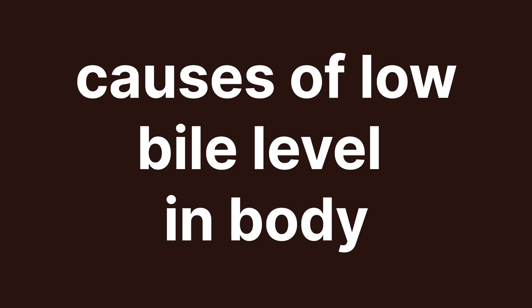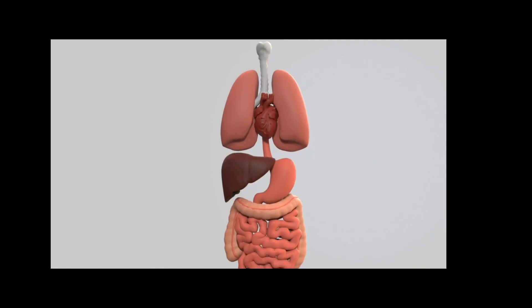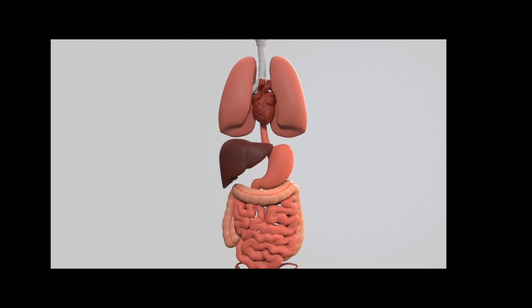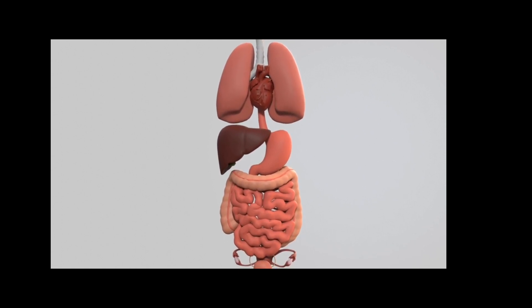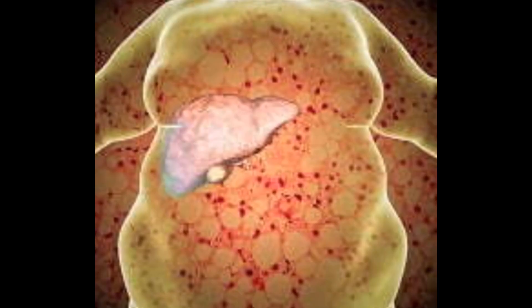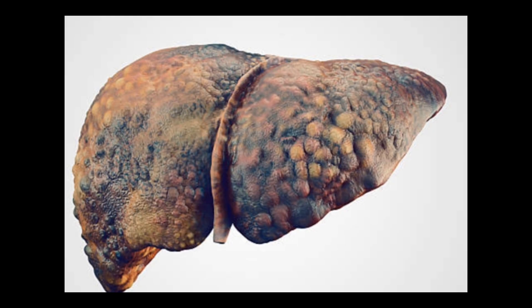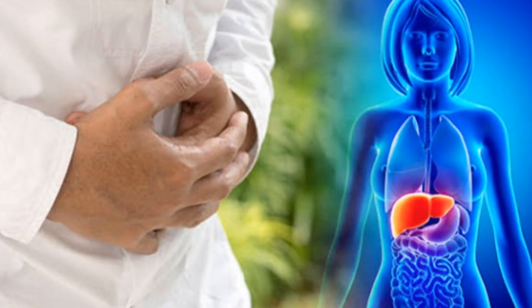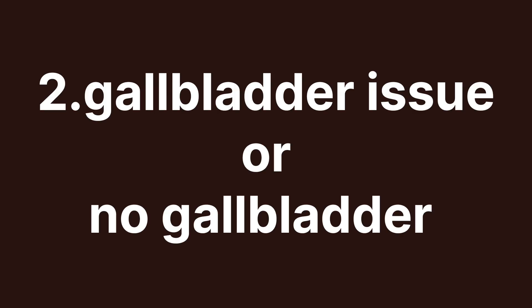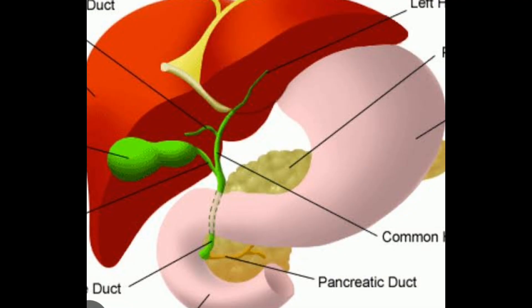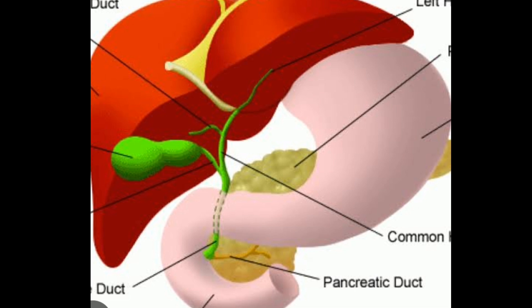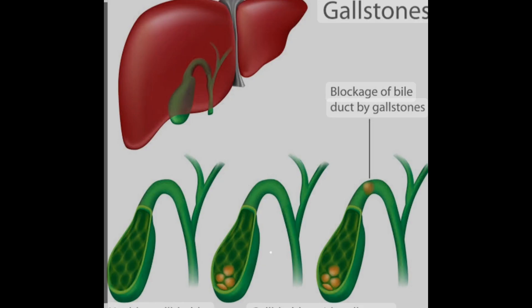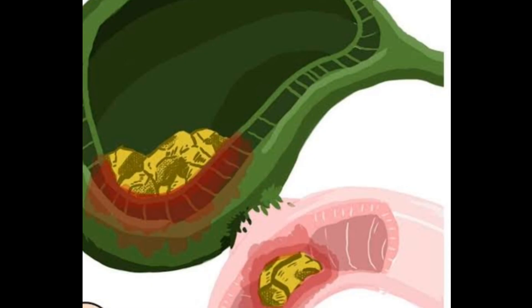Now, causes of low bile in the body. Low bile production can be attributed to various factors. One, liver disorder: conditions such as fatty liver, hepatitis or liver damage can impede the liver's ability to produce bile. Two, gallbladder issue or no gallbladder: bile is stored in the gallbladder and problems like gallstones or inflammation can hinder its normal functioning.